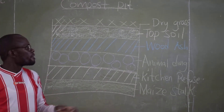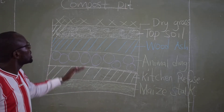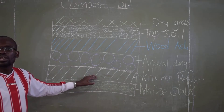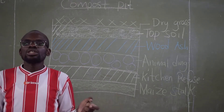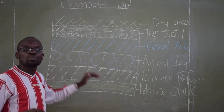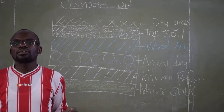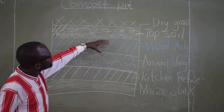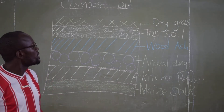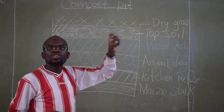Then number two is the top soil. The work of this top soil is to introduce bacteria — those small animals that live in the soil. It is the bacteria that will work on the kitchen refuse; through their excretion and waste they will make the materials rot and decompose. The bacteria need food to produce waste, so the animal dung serves as food for them. That is the importance of the top soil: to introduce bacteria.